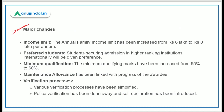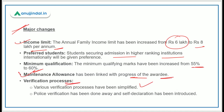The changes made under the scheme include: income limit increased from Rs. 6 lakh to Rs. 8 lakh per annum for eligibility; students securing admission in higher-ranking institutions will be given preference; minimum qualifying marks increased to 60% from 55%; maintenance allowance linked with the progress of the awardee; and the verification process simplified — police verification has been done away with and self-declaration introduced.